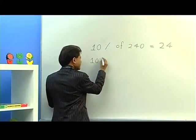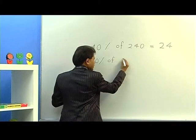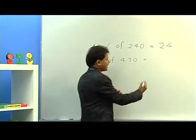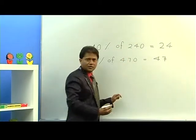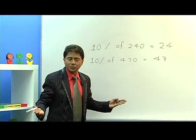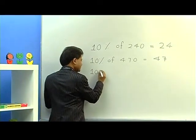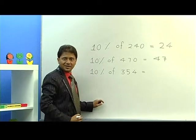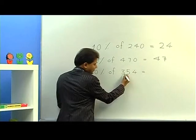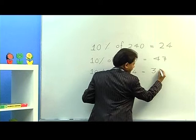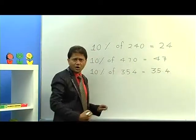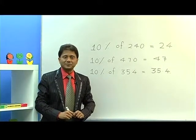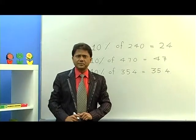Suppose you have to find 10% of 470 — just take away the zero, so you get 47. What happens if you do not have a zero? Very simple. Take 10% of 354: you just divide by 10, which gives you 35.4. So you saw how easy it is to find 10% of any number.